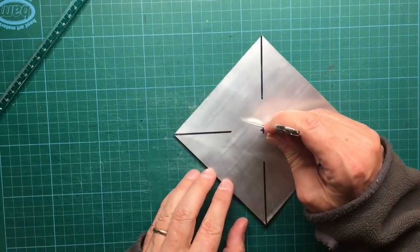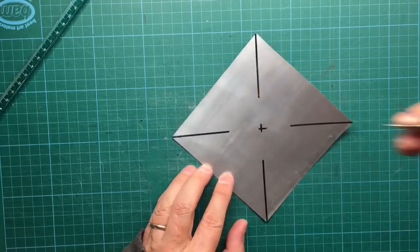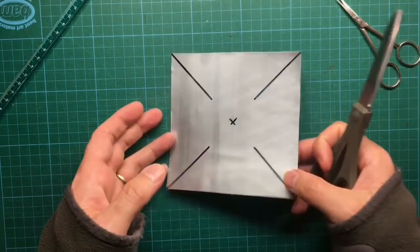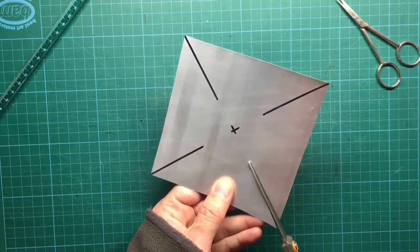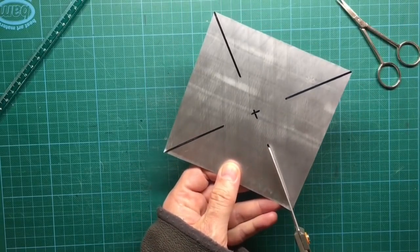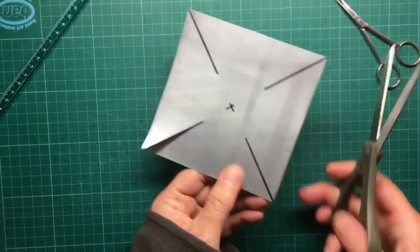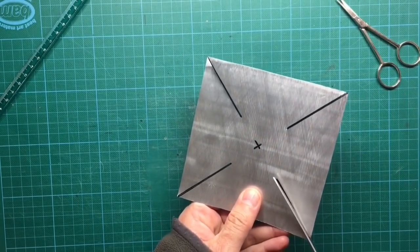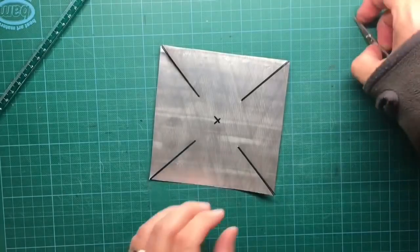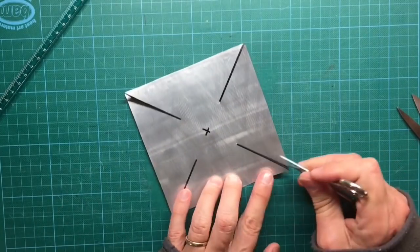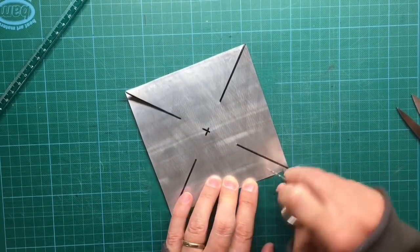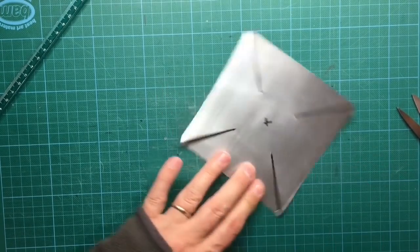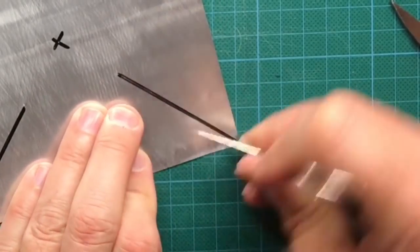Make a small hole with the scissor in the center of the square. Cut along the diagonal lines 6 cm into the direction of the center. Do not cut all the way to the center or your pinwheel will fall apart. Punch holes on four flaps of the aluminum square as shown here.